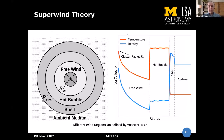In the adiabatic picture, a superwind can have four regions: a free-expanding wind region, then the formation of a hot bubble, then a higher-density shell, and finally the ambient medium. This is the typical four-region structure we may see in superwind regions.